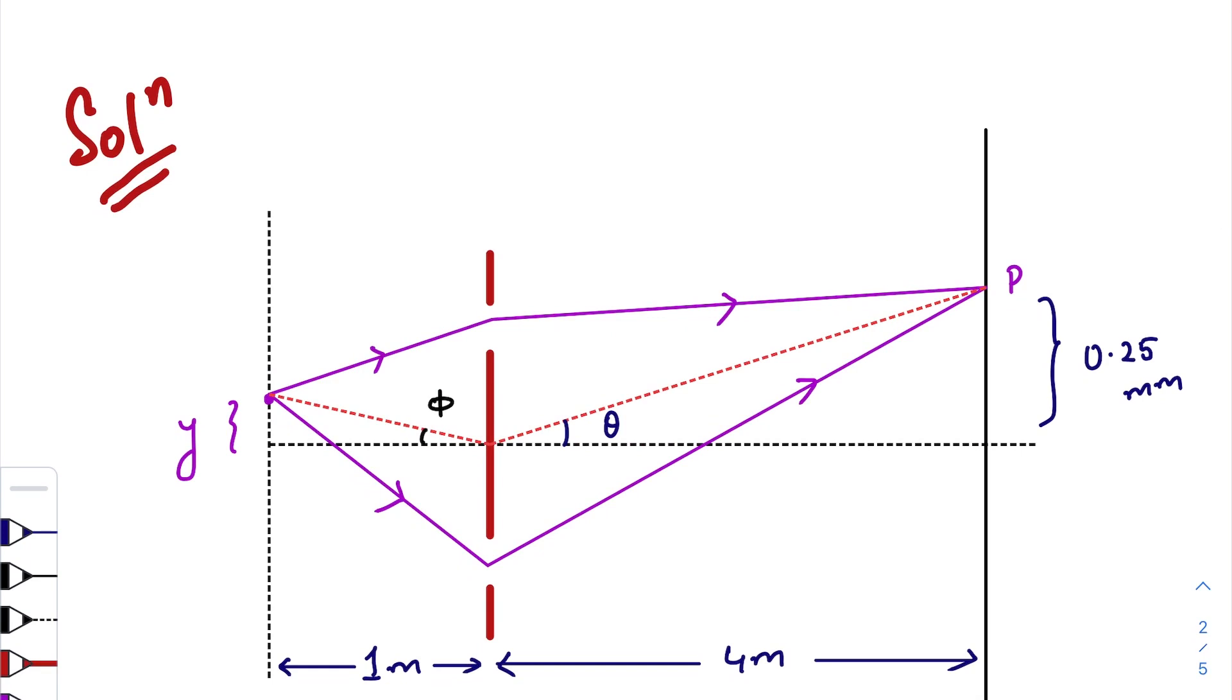So there will be two path difference behind the slits and in front of the slits. So in this region, the extra path traveled by the wave is this length. So if this one is phi, this one is phi. So this length will be d sine phi.